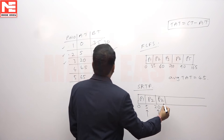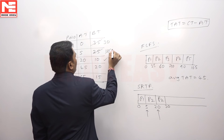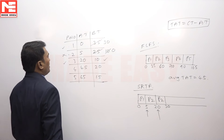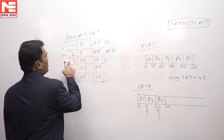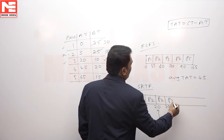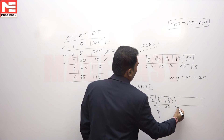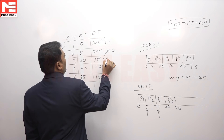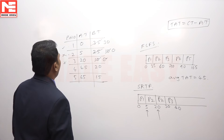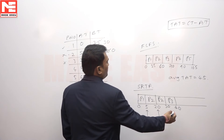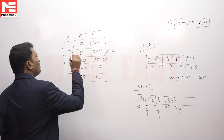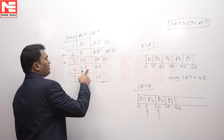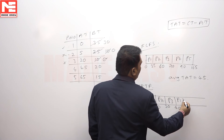At time 30, P1 and P3 are available. P3 is the shortest job. Execute P3 for 10 seconds, reaching time 40, and P3 becomes 0 — P3 is completed. At time 40, only P1 is available; P4 hasn't arrived yet (P4 arrives at 45). So execute P1 for 5 seconds until time 45. P1's remaining time is now 25.